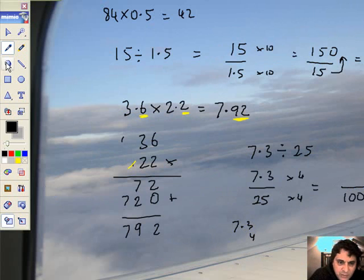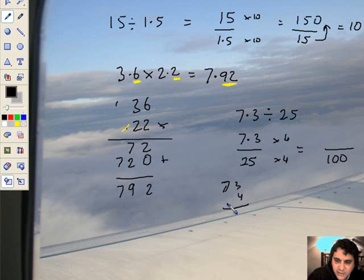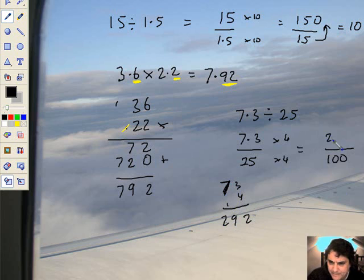Then we'll just do it as a short multiplication sum. Right. 4, 3's are 12. 4, 7's. Not very good, is it? 4, 7's are 28. Plus 1 is 29. Therefore, I have got 29.2.